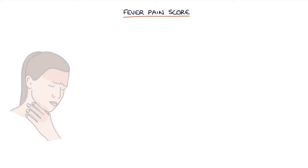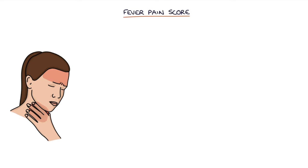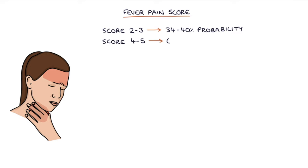An alternative to the Centor criteria is the FeverPAIN score. A FeverPAIN score of 2–3 gives a 34–40% probability of bacterial tonsillitis, and a score of 4–5 gives a 62–65% probability of bacterial tonsillitis.